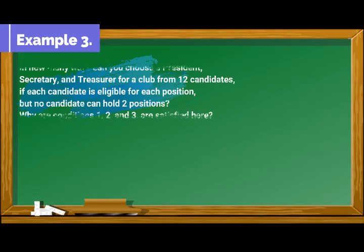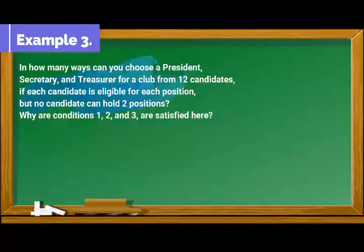Example number 3: In how many ways can you choose a president, secretary, and treasurer for a club from 12 candidates? If each candidate is eligible for each position, but no candidate can hold two positions. Why are conditions 1, 2, and 3 are satisfied here?